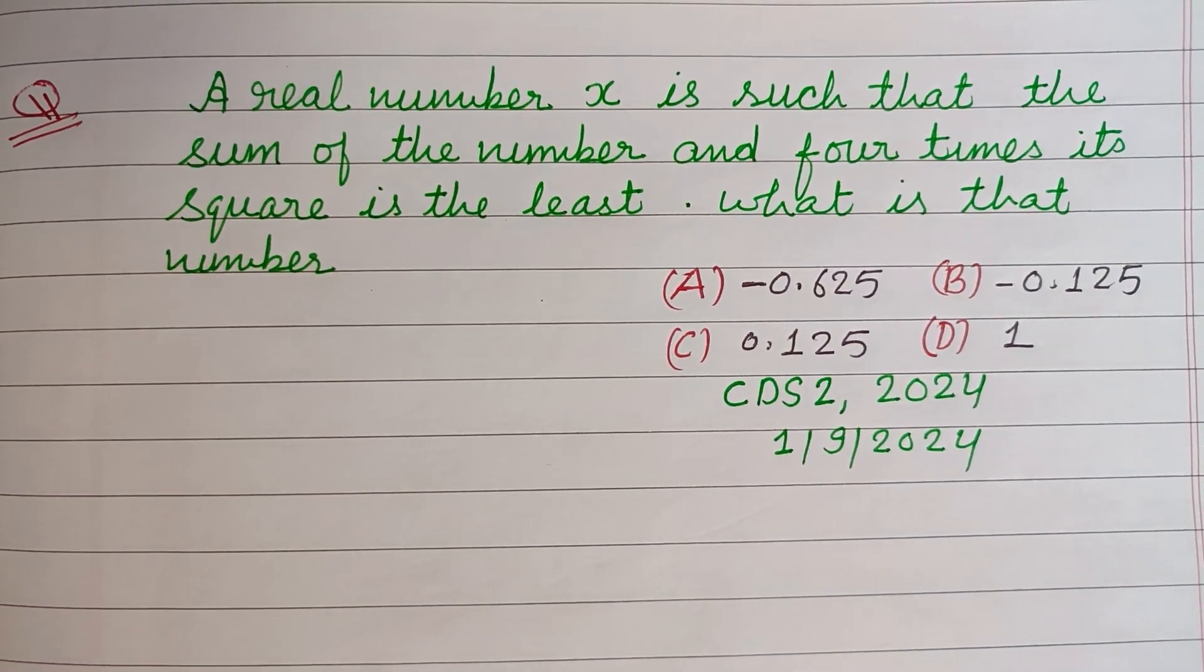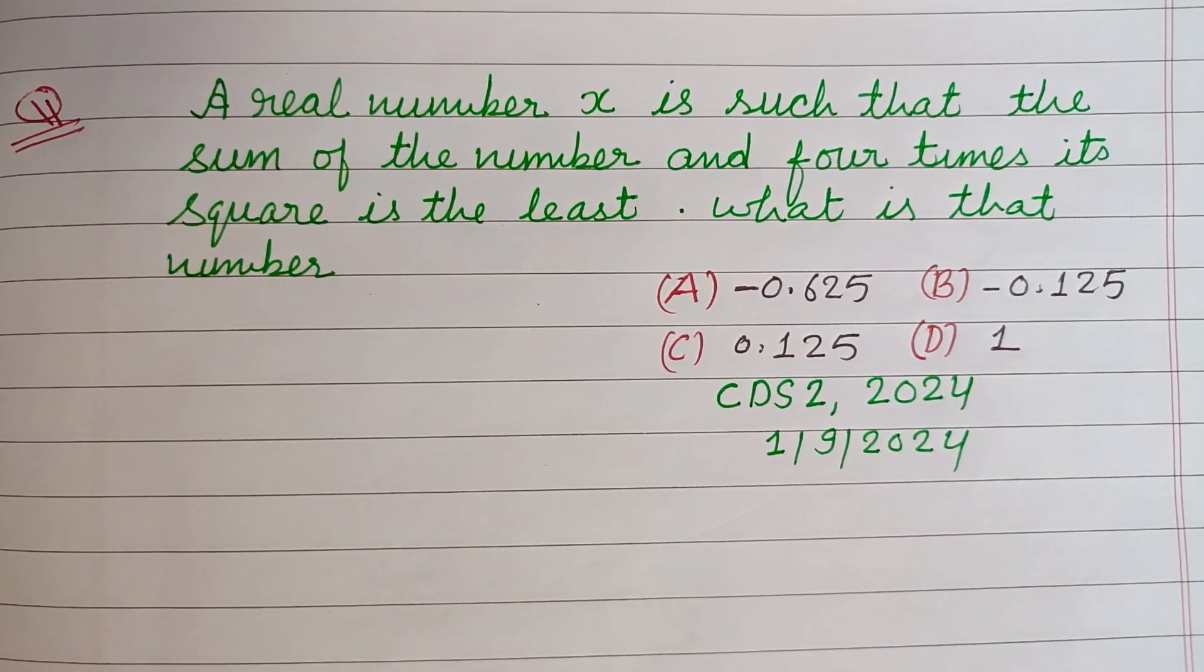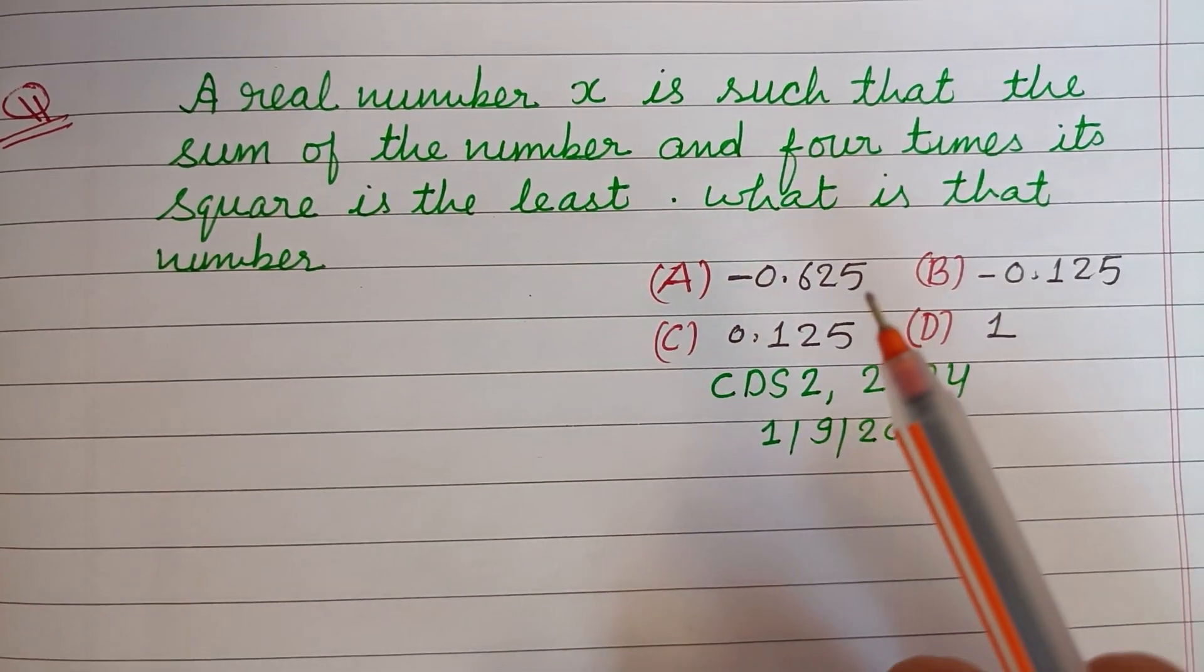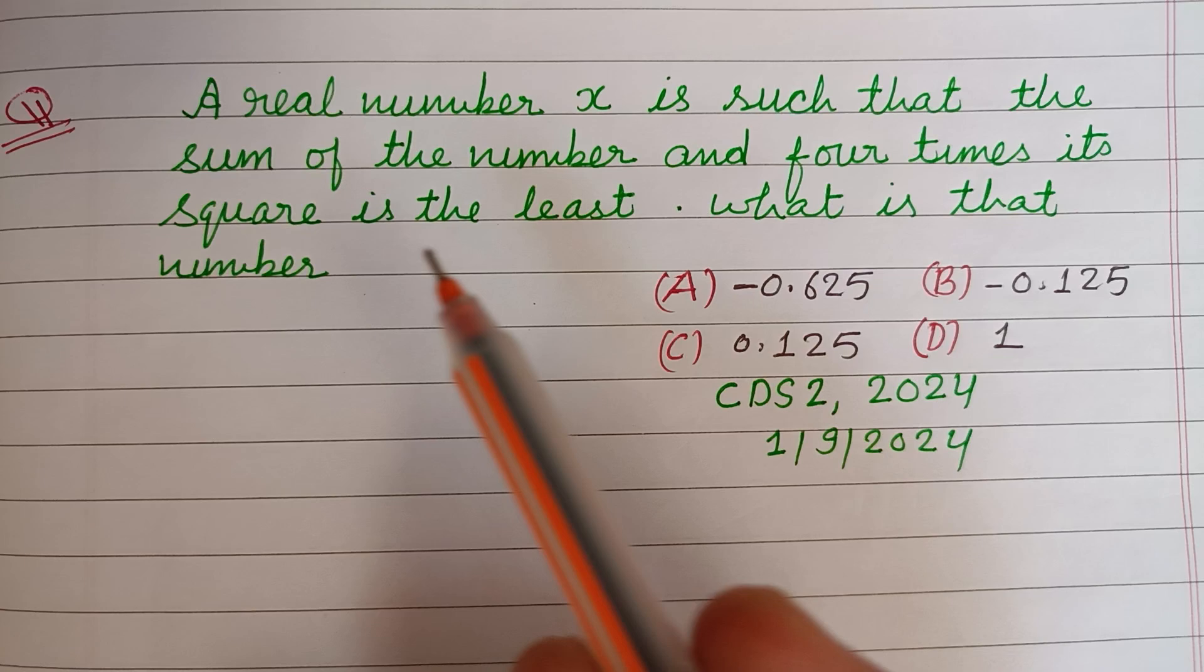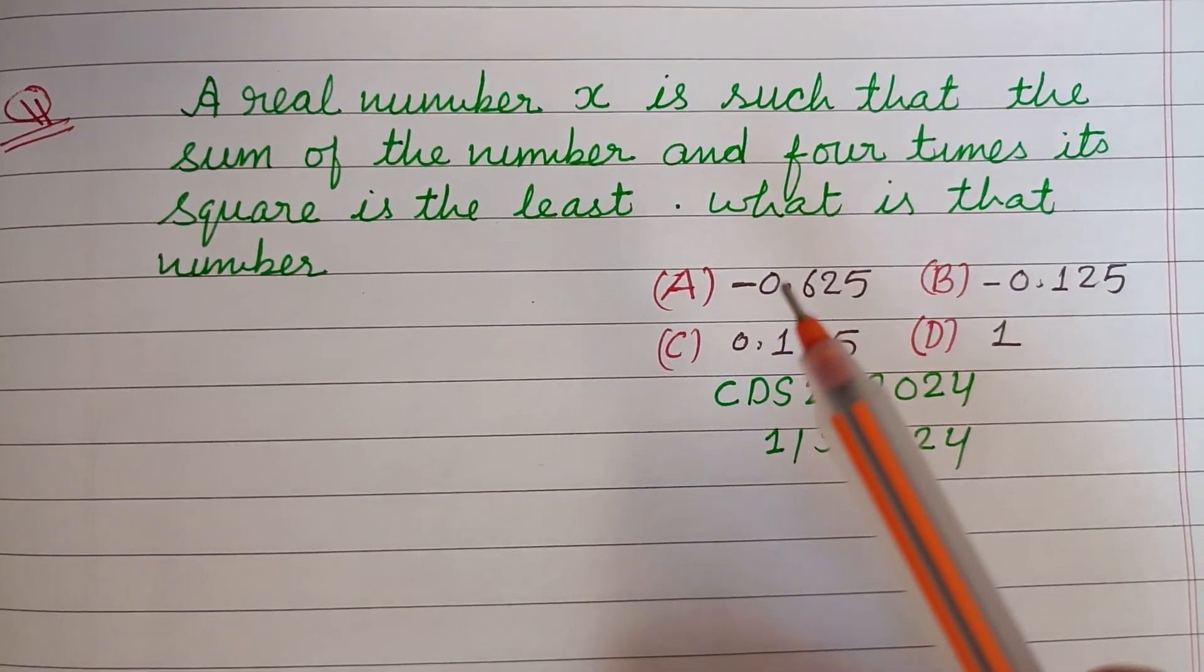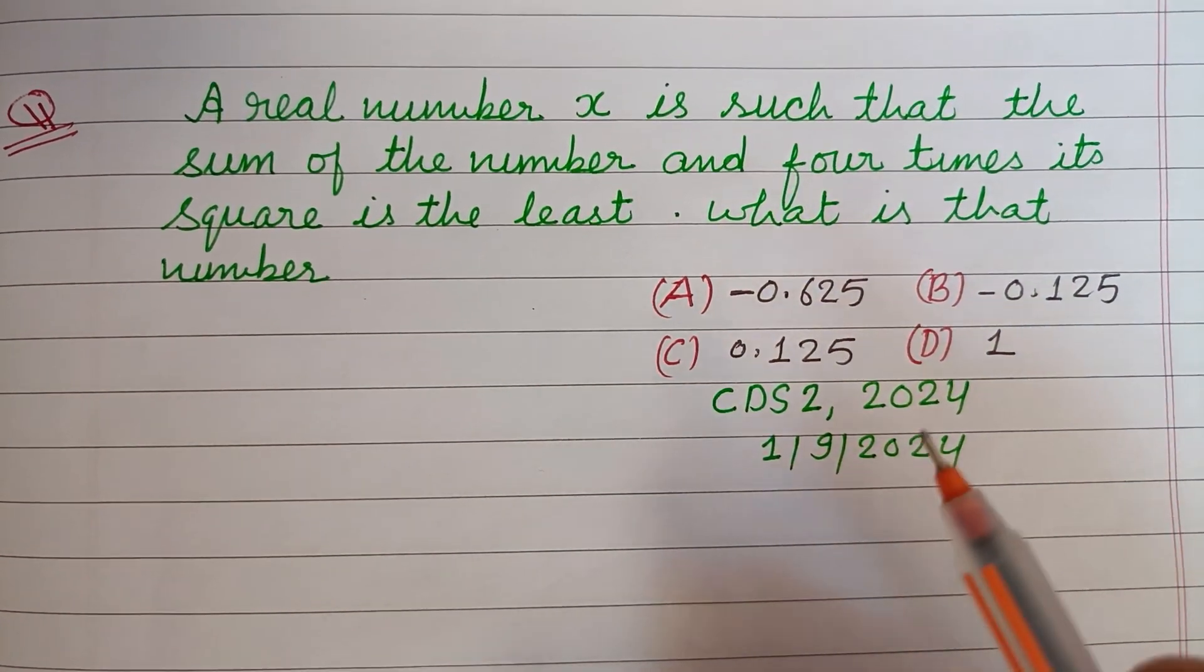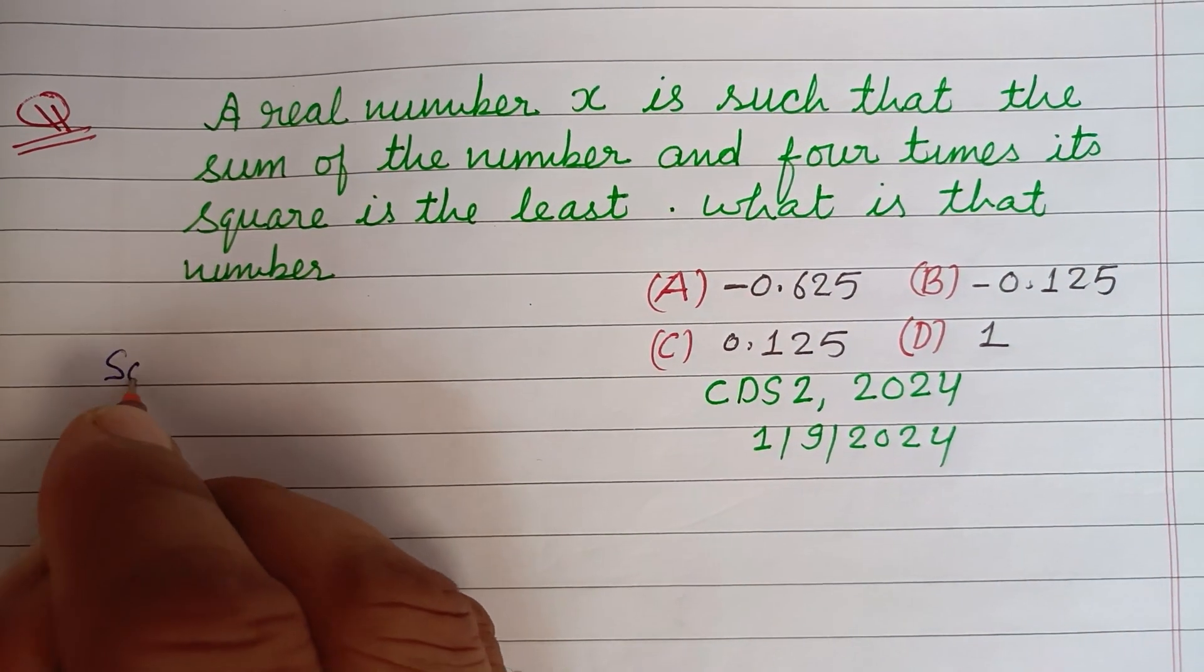Hello viewers, warm welcome to this YouTube channel. Question from CDS 2nd 2024: A real number X is such that the sum of the number and four times its square is the least. What is the number?